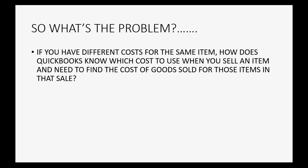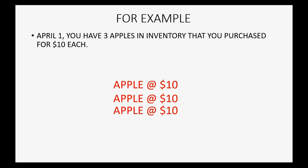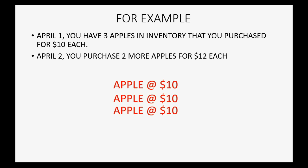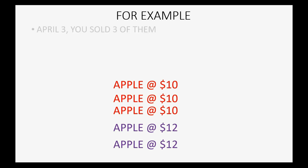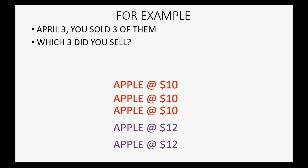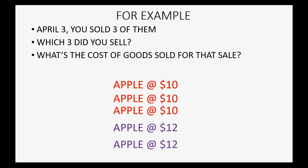For example, let's imagine on April 1st you have three apples in your inventory that you previously purchased for ten dollars each. On April 2nd you purchased two more apples, each for twelve dollars. On April 3rd you sold three of them — which three did you sell? They all look alike. If you don't know which particular three apples you sold, what costs get assigned to determine the cost of goods sold to subtract from your sales for that sale?